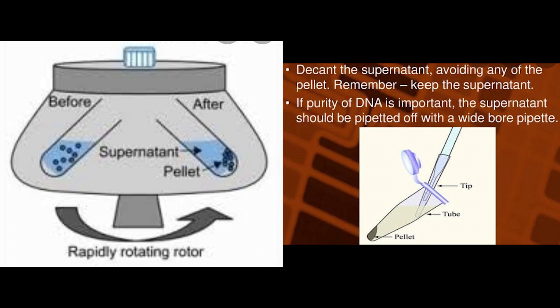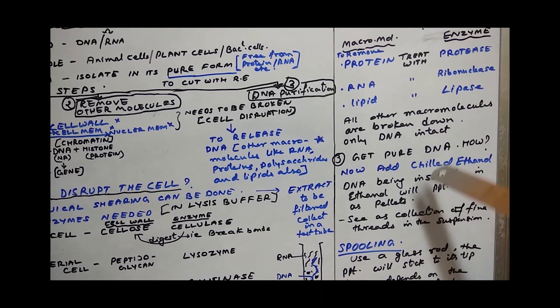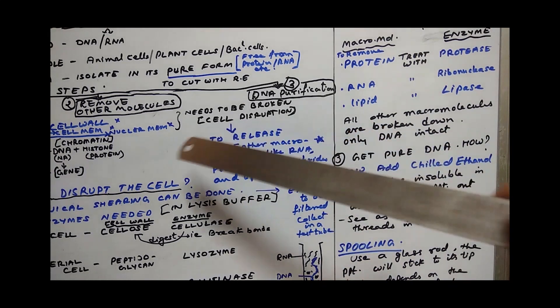So that the digested macromolecules settle down as pellets, and the supernatant - that is the clear liquid up - contains the DNA strands. We will pour it into another test tube, that supernatant part, and do the further steps with it. That was the second step - removing the other molecules.